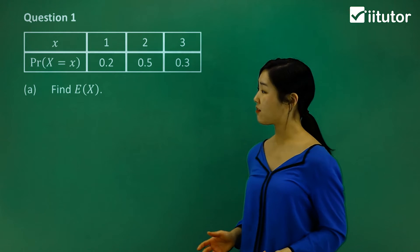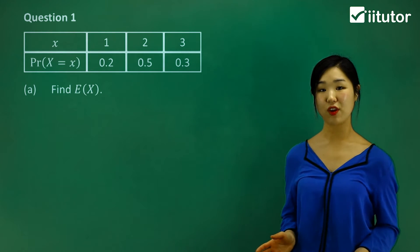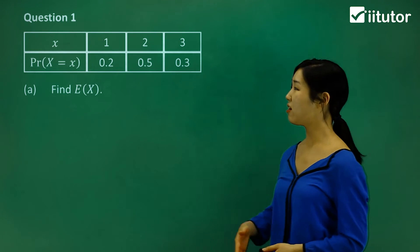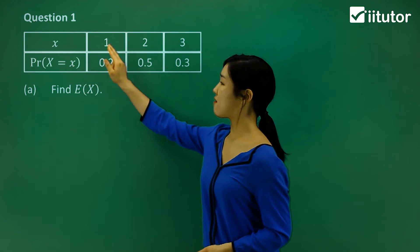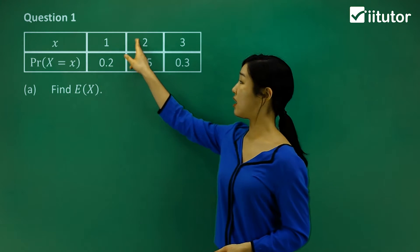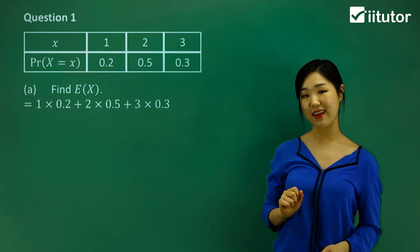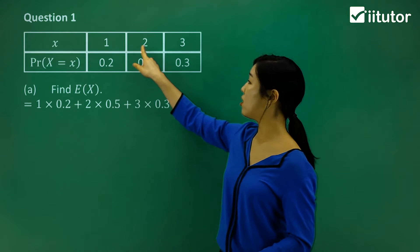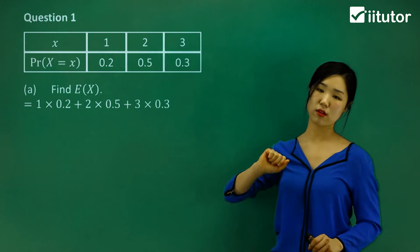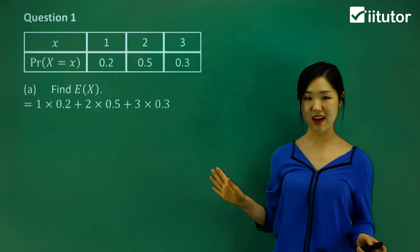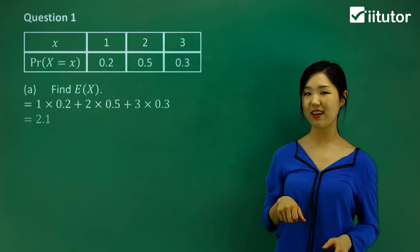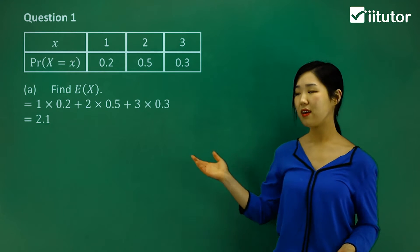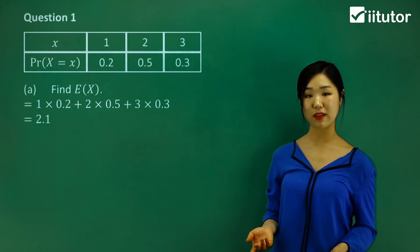Part A says find the expected value. You should be able to do this very easily now — we multiply our variable by the probability in each case, then add them together. So that's 1 times 0.2, plus 2 times 0.5, plus 3 times 0.3, which gives us 2.1. So that's the method of calculating expected value.